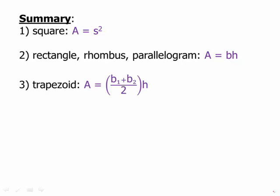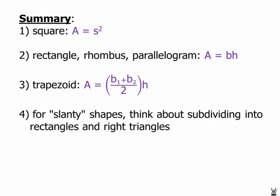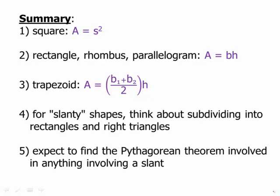A trapezoid is the average of the bases times the height. And for any slanty shapes, think about subdividing into rectangles and right triangles. And this might even be true, for example, if we were dealing with an irregular quadrilateral. And expect to find the Pythagorean theorem involved in anything involving a slant.